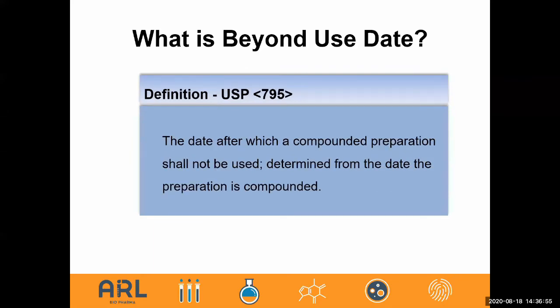Another definition of the beyond-use date from USP 795 is more basic, saying it's the date after which a compounded preparation should not be used, determined from the date of preparation. We also see similar definitions from 503b and the FDA regarding in-use date. We'll also discuss some of the nomenclature around stability studies — BUD, expiration date — and explain that throughout today's talk.